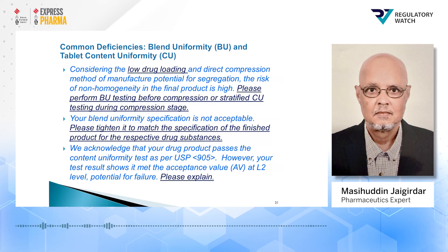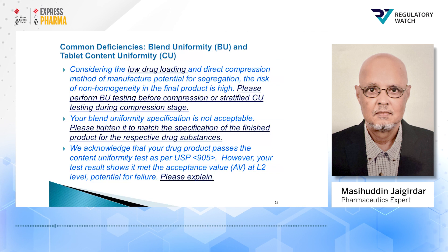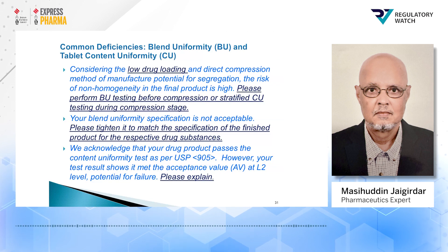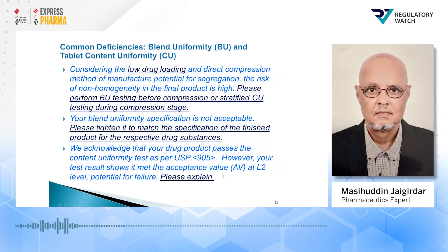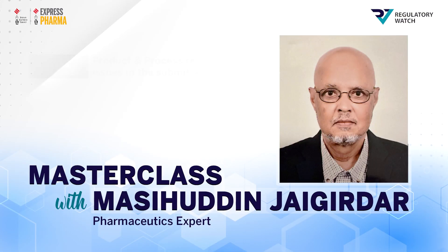Another example: we acknowledge that your drug product passes the content uniformity test as per USP 905. However, your test results showed it met the acceptance value (AV) at the L2 level, which indicates potential for failure. The firm was asked to please explain, because passing only at the L2 level for the acceptance value is a concern.